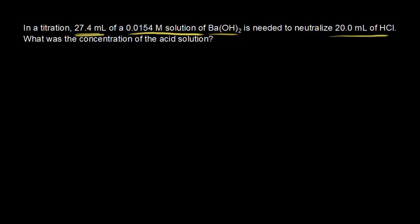So let's start with what we know. We know the concentration of barium hydroxide. It's 0.0154 molar. And we also know that molarity is equal to moles over liters. So we have 0.0154 is equal to, let's make moles X over liters. 27.4 milliliters is 0.0274 liters.